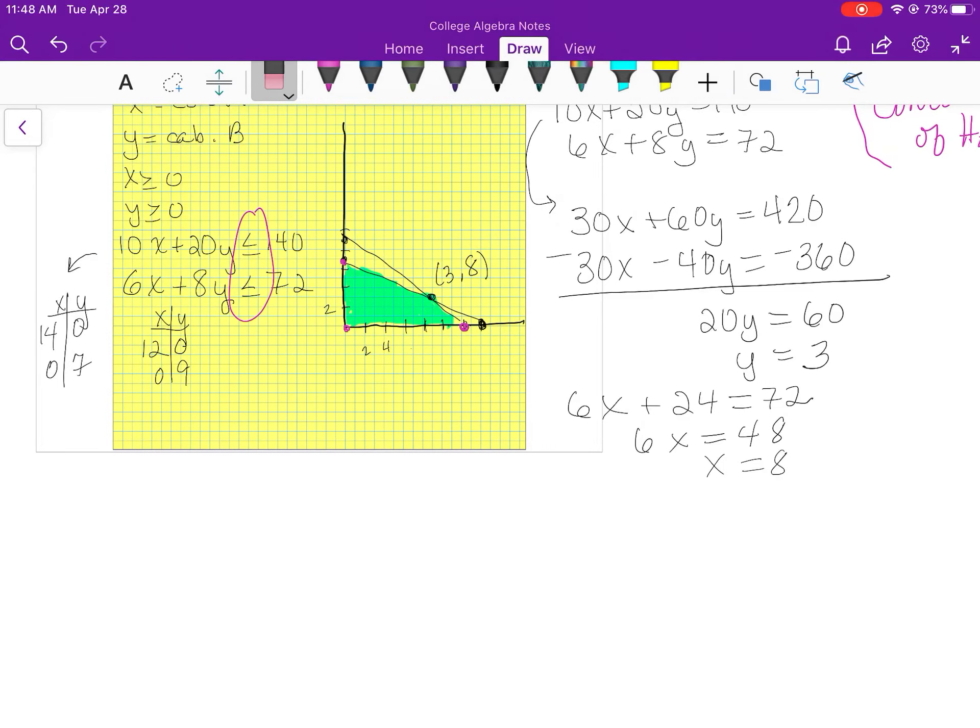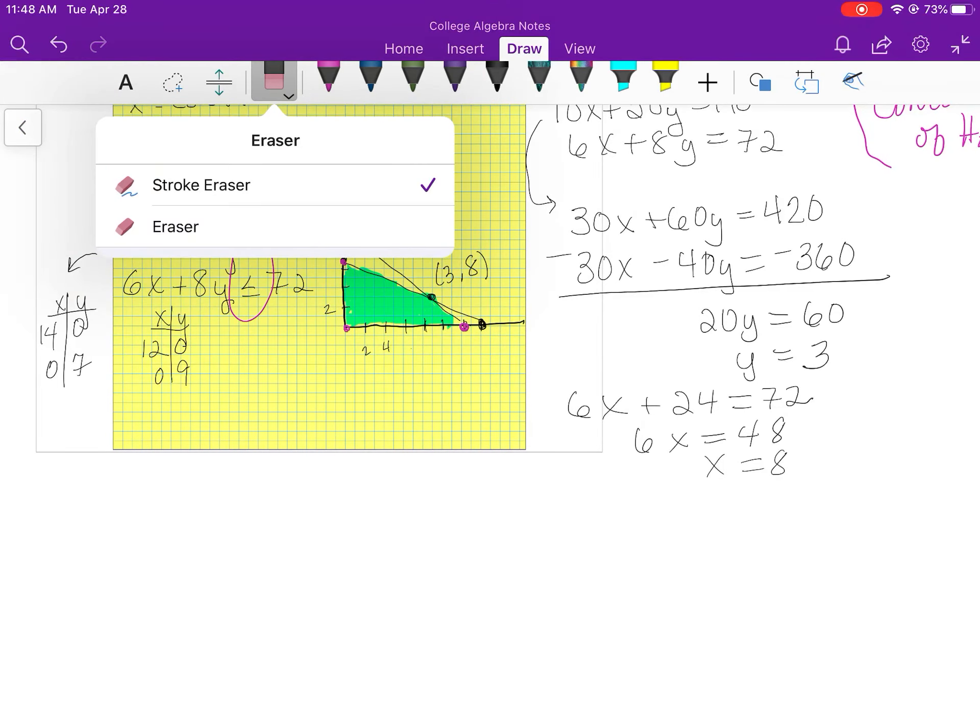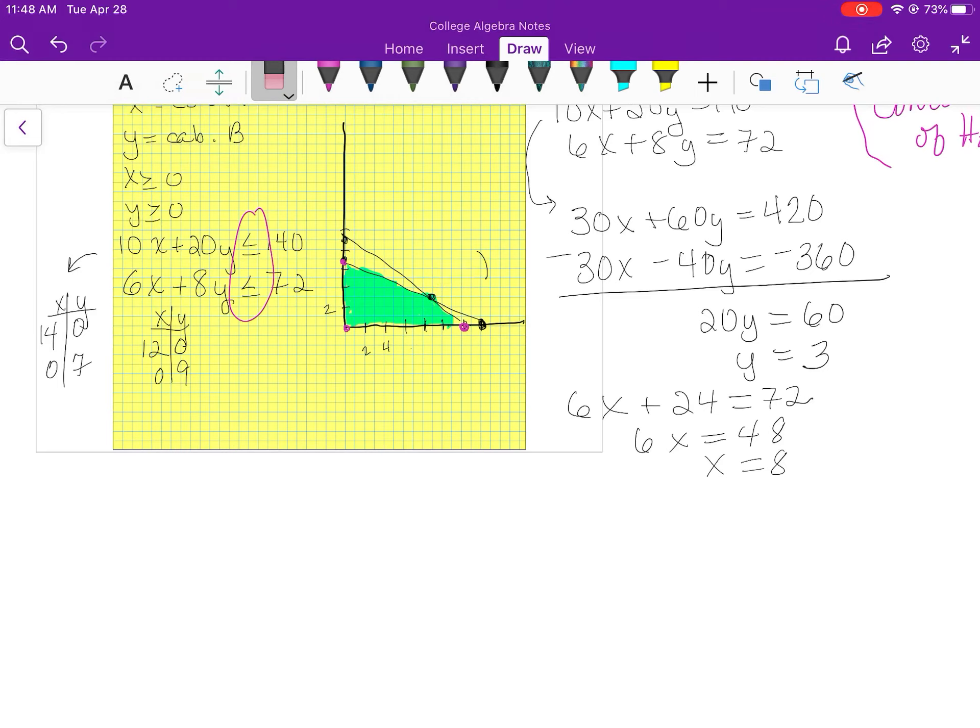So I realized that I have a mistake right here. That is not the ordered pair (3,8). That is the ordered pair (8,3).